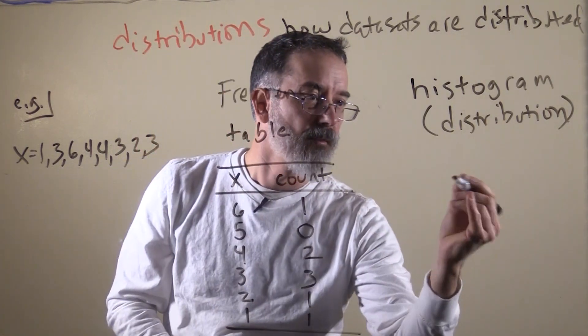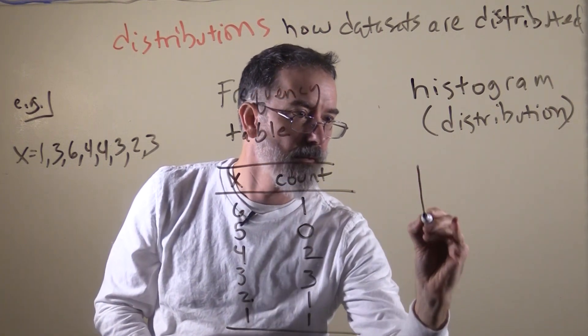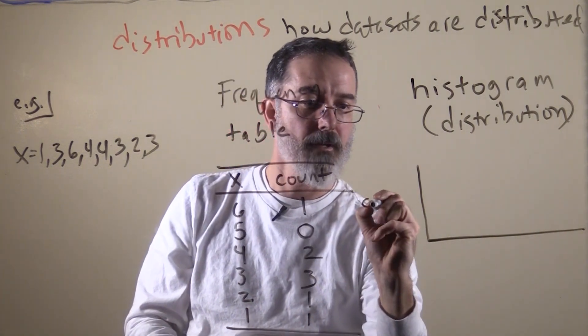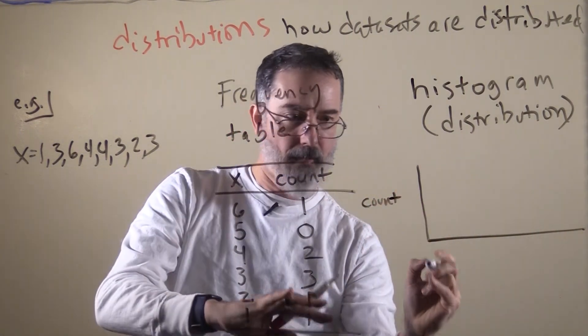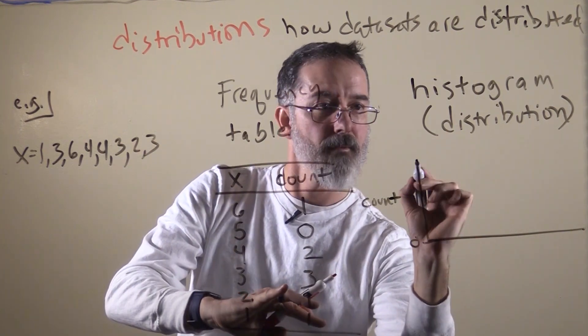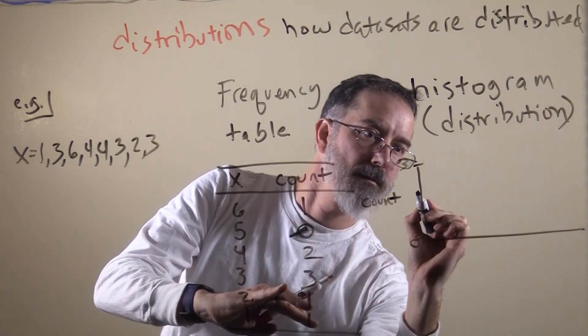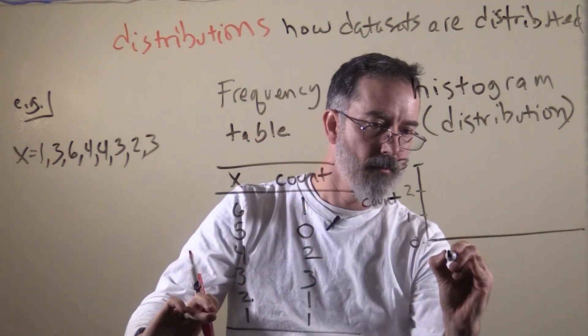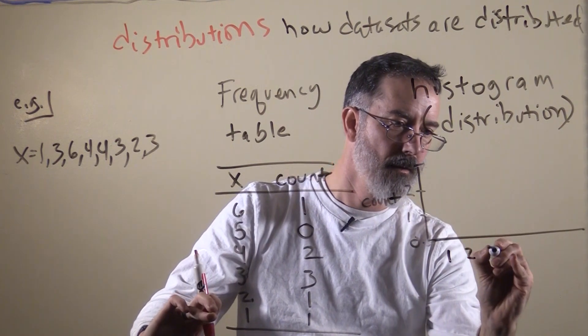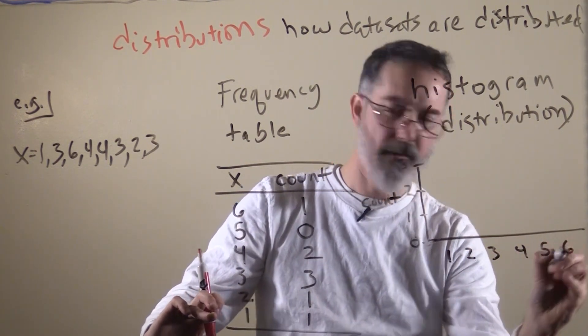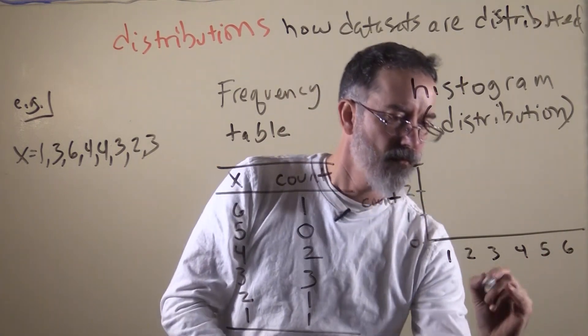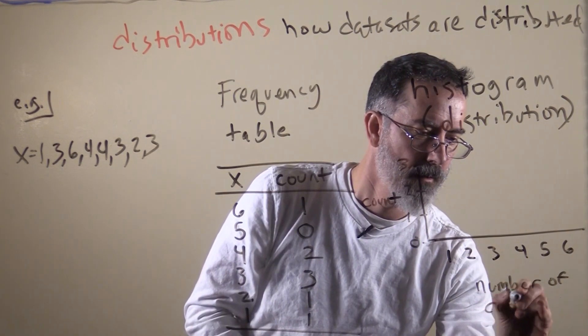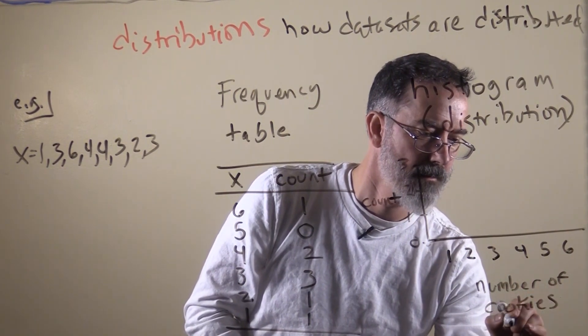So a histogram is a way to visually display the data in the data set. And it is actually kind of a summary of this. So for this what we are going to create is a vertical and a horizontal axis. And this is going to have to be high enough. So this is going to be our count. And let's say 0, and the top is 3. So 1 and 2. And across the bottom we are going to put all of our values: 1, 2, 3, 4, 5, and 6. And these were number of cookies eaten.